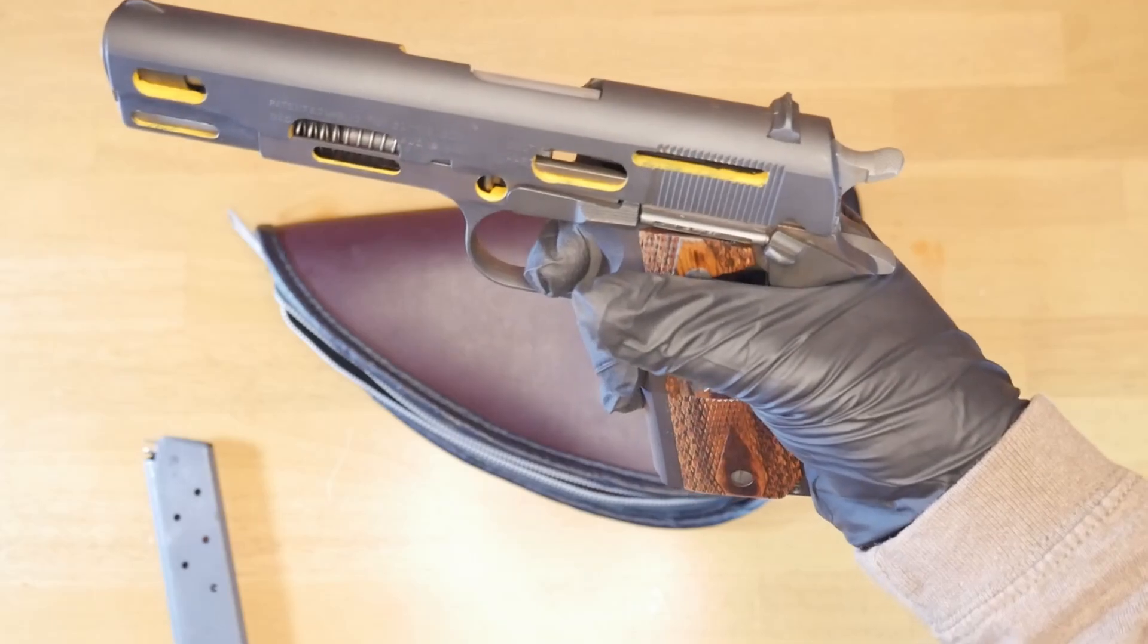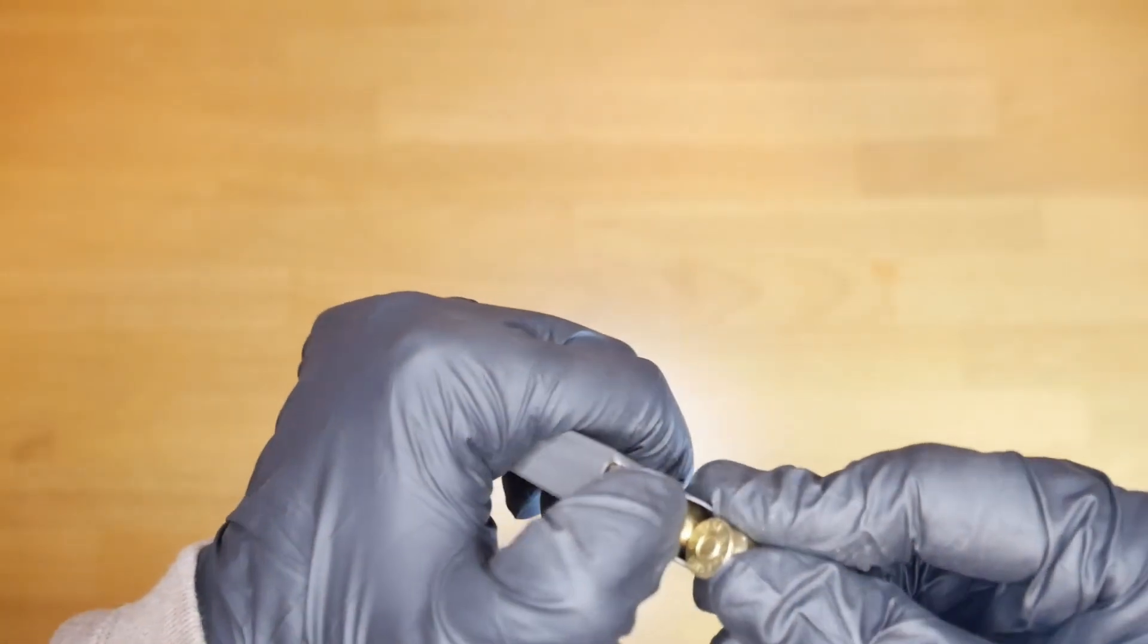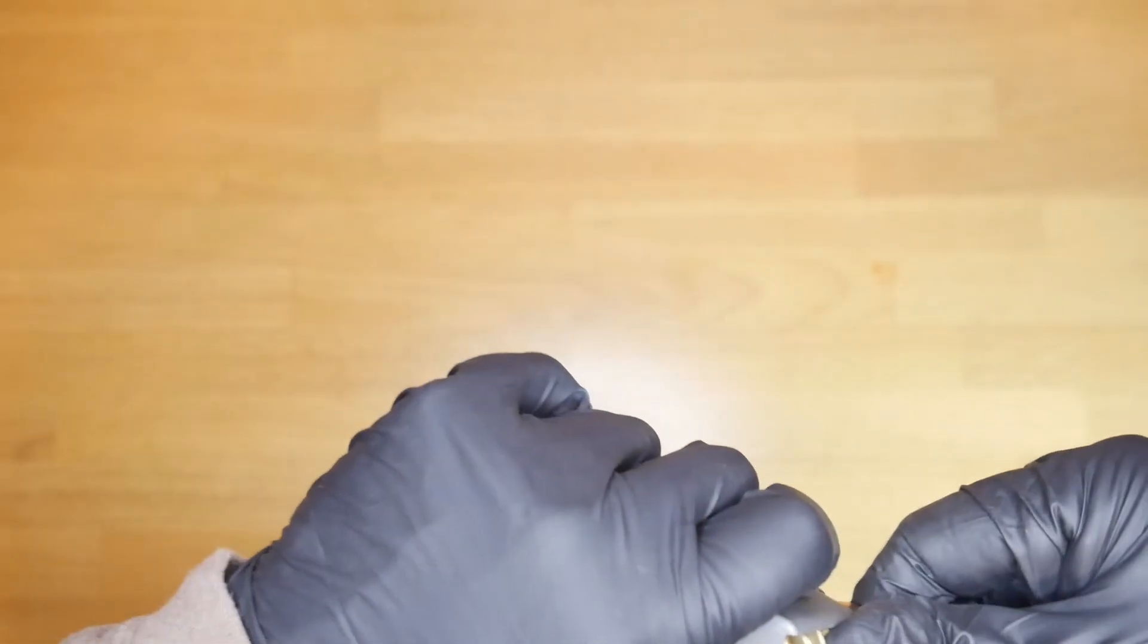Cylinder and Slide took a regular Colt and made cuts in the frame and slide so you could see the inner workings. Even the provided magazine has a cutout so you can see the rounds inside.